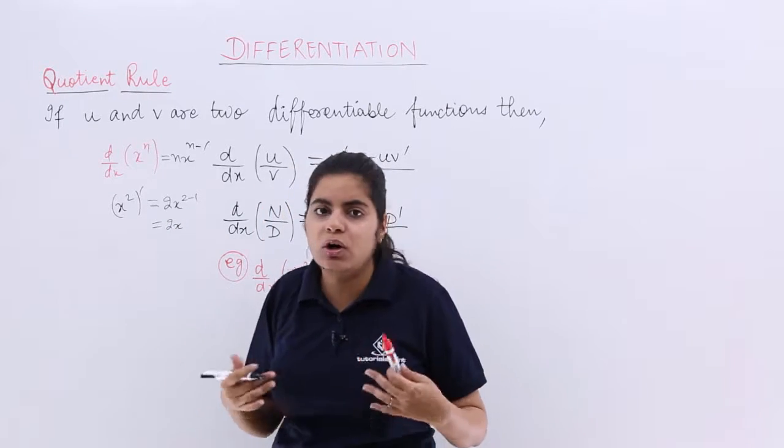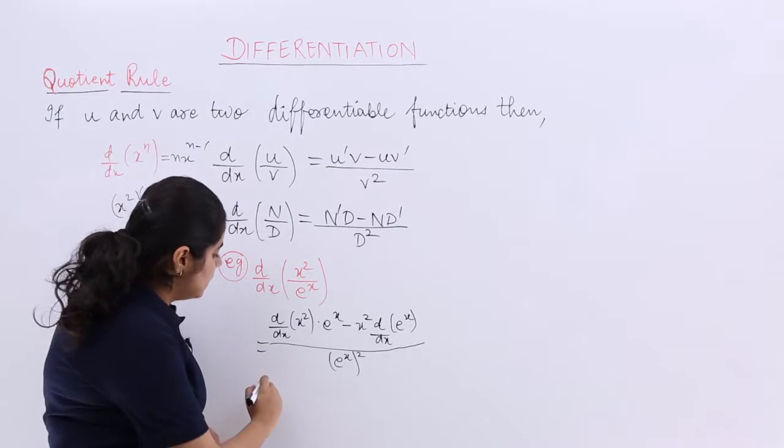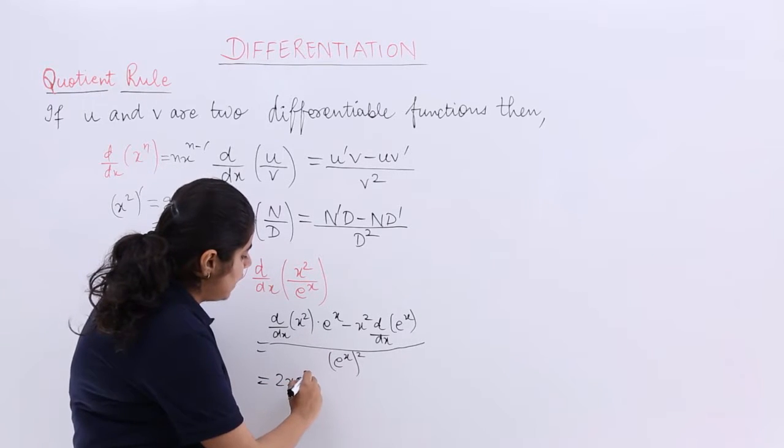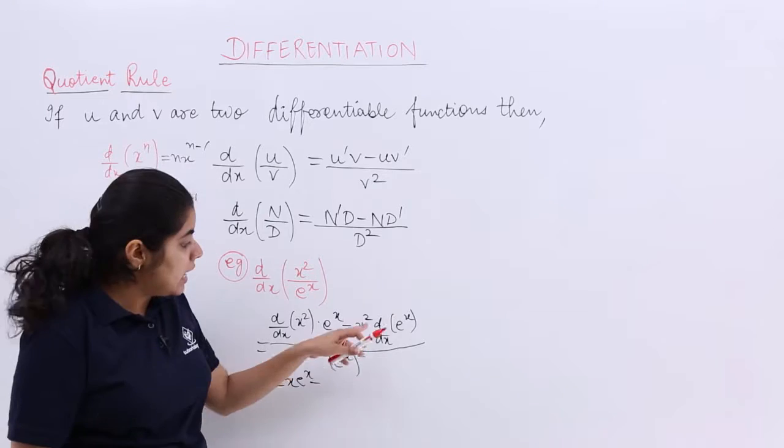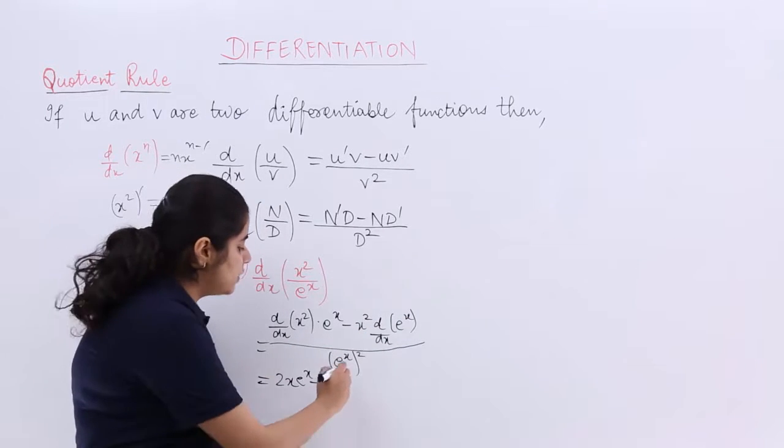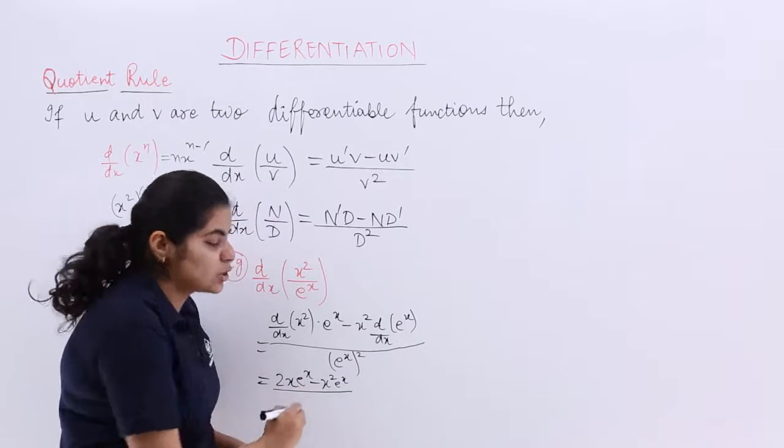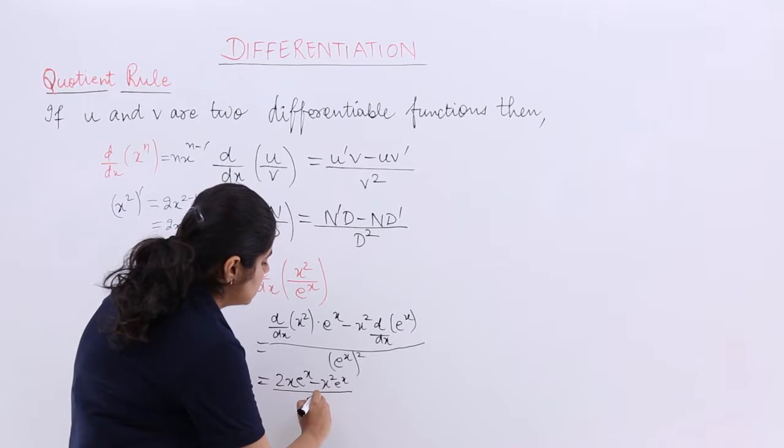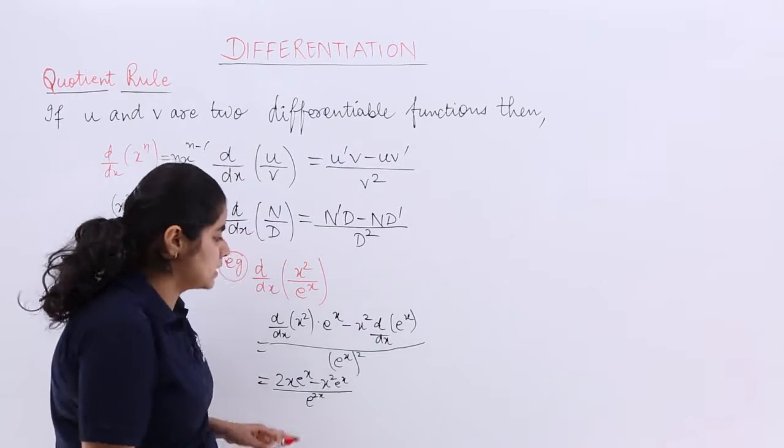This you already did in your class 11th, right? So the answer directly I am writing is 2x multiplied by e raised to the power x minus x square multiplied by differentiation of e raised to the power x, which is e raised to the power x only. In the denominator, it is nothing but e raised to the power x square, which is e raised to the power 2x.